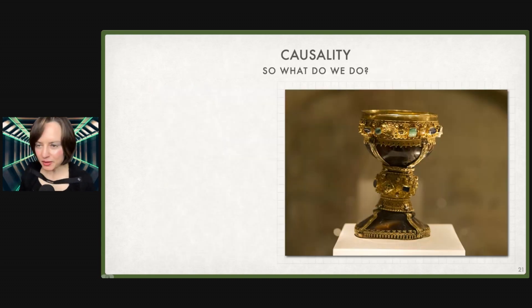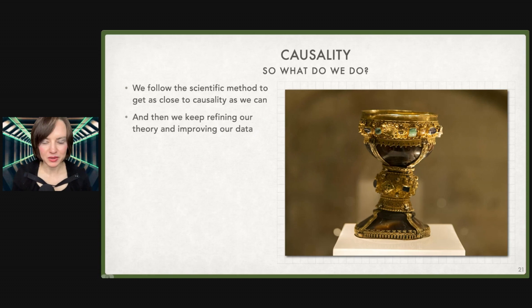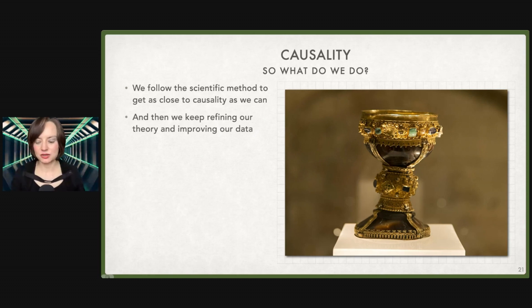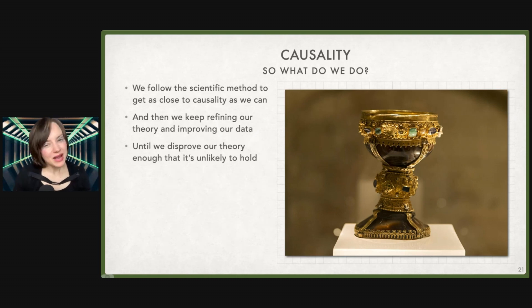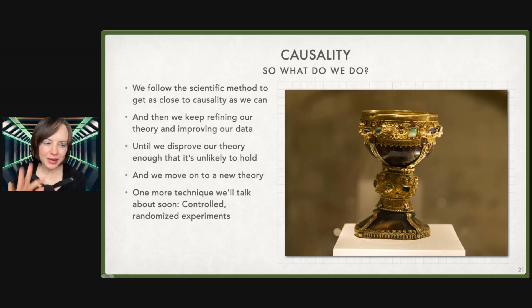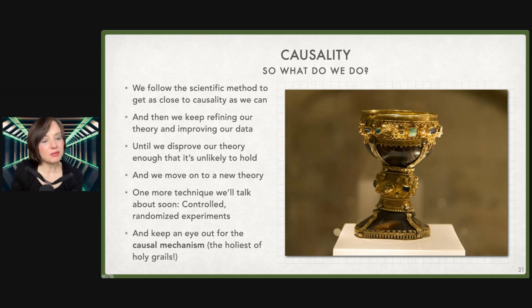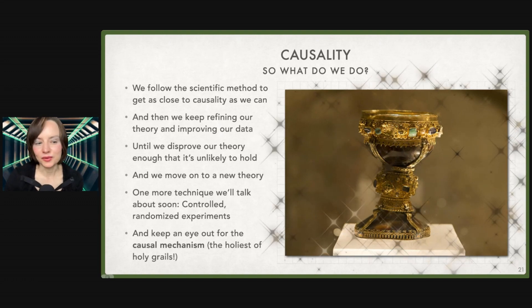So what do we do? We care about causality. How do we use data science to better understand it? We follow the scientific method as closely as we can to get to causality. We keep refining our theory and zoom into those causal mechanisms to keep improving it. We'll talk about controlled randomized experiments a little in this course. But really what we're going to do is drill down and try to get into the causal mechanism.